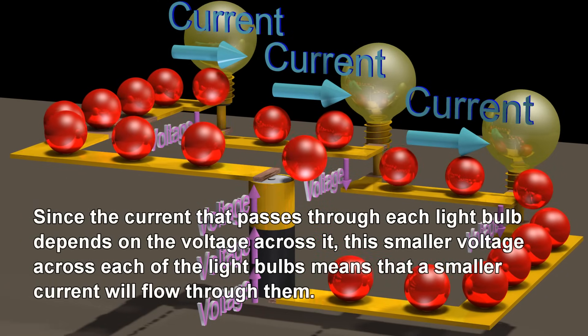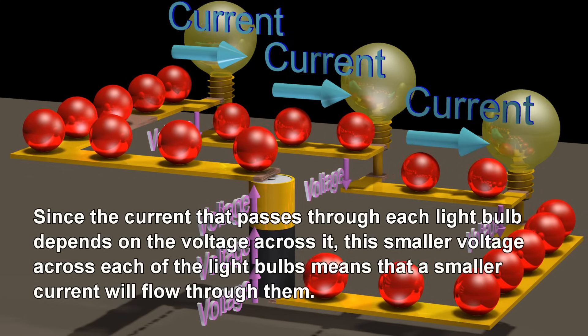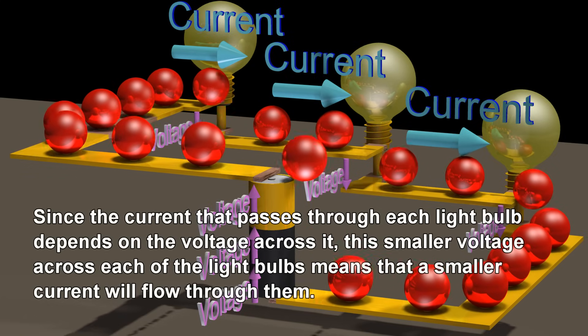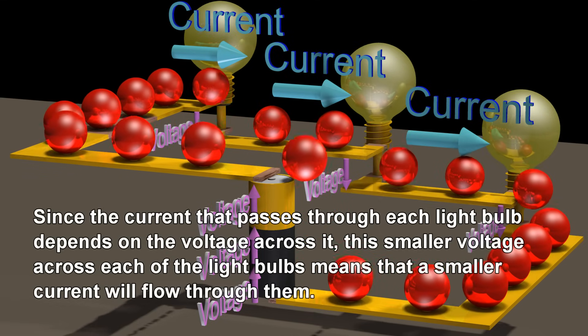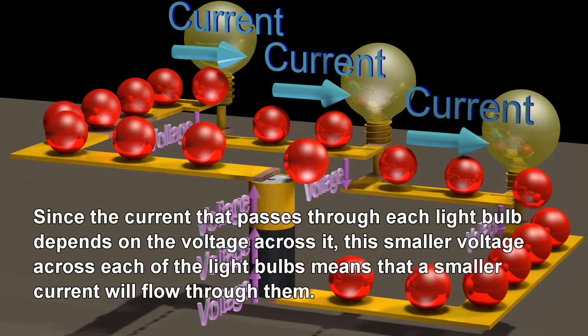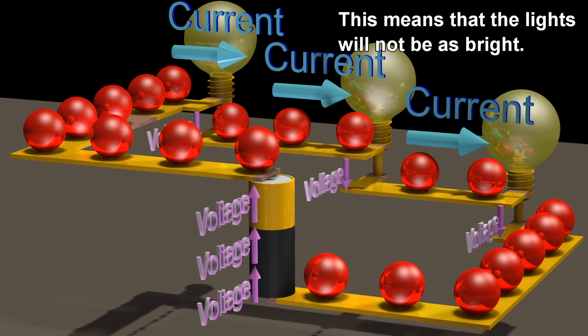Since the current that passes through each light bulb depends on the voltage across it, this smaller voltage across each of the light bulbs means that a smaller current will flow through them. This means that the lights will not be as bright.